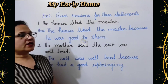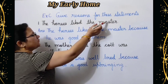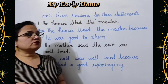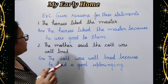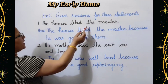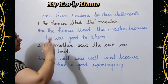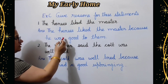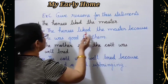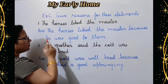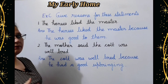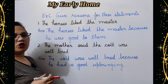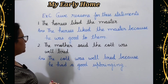Next is Exercise C — give reasons for these statements. Ek statement dhi huyi hai aur aapko uska karan batana hai. First statement: The horses liked the master. Ghode apne swami ko pasand kartay thay. Answer: The horses liked the master because he was good to them — kyunki wo unke saath bhoat achcha vivaar karta tha.